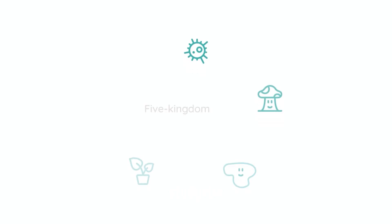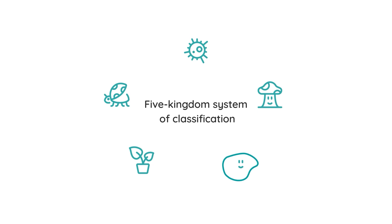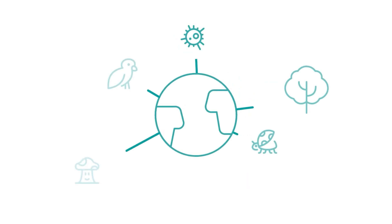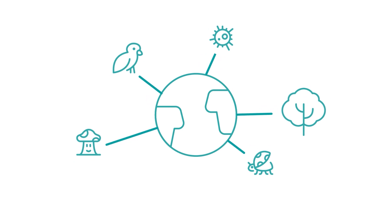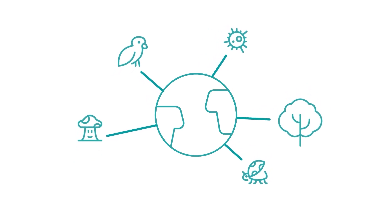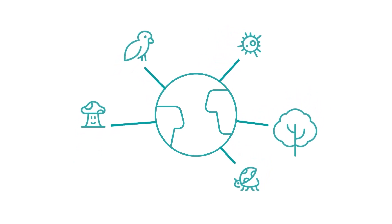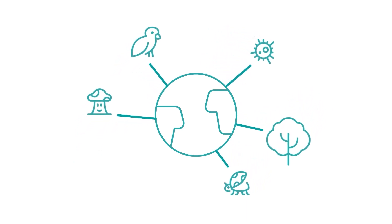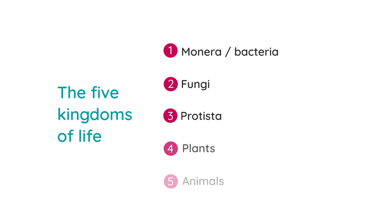Now we will take a look at the five kingdom system of classification of organisms. Due to the fact that there is such a wide variety of living organisms on our planet, it has been necessary to arrange them into groups based on similarities. The five kingdoms of life are Monera, also known as bacteria, Fungi, Protista, Plants, and Animals.